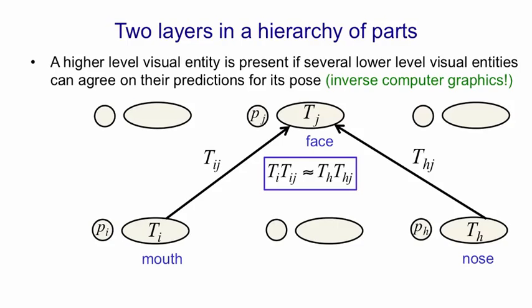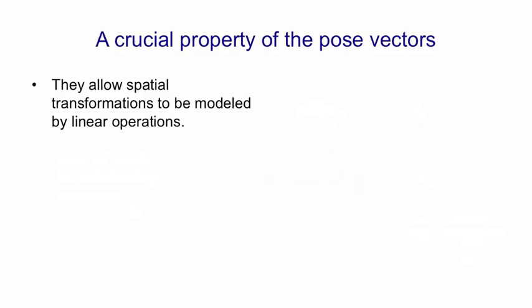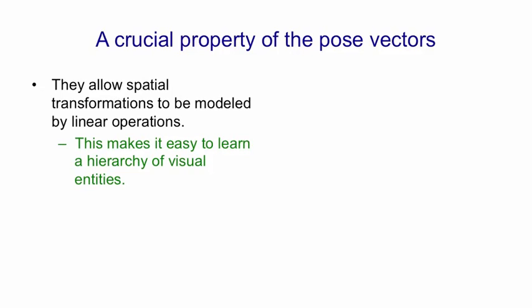What we're doing here is inverse computer graphics. In computer graphics, if you knew the pose of the face, you could compute by using the inverse of Tij the pose of the mouth, and similarly for the nose. So in computer graphics, you're going from poses of larger things to poses of their parts. In computer vision, you need to go from the poses of the parts to the poses of larger things, and you need to check consistency when you do that. If we can get a neural net to represent these pose vectors as vectors of neural activity, then we get a very nice property: spatial relationships can be modeled as linear operations. That makes it very easy to learn a hierarchy of visual entities.